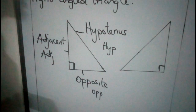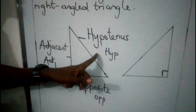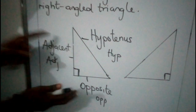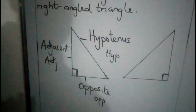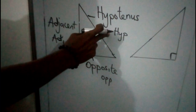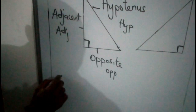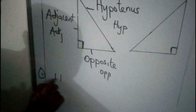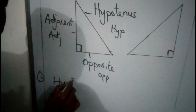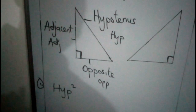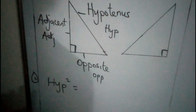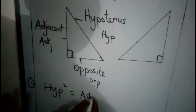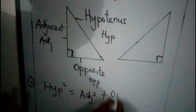Now, because the hypotenuse is the longest side, in Pythagoras Theorem we assume it equals the addition of the other two sides. So if you have to find the hypotenuse, the formula is: Hypotenuse squared equals Adjacent squared plus Opposite squared. We are squaring — please take note of that square. I am adding the other two sides together because I want to get the longest side.